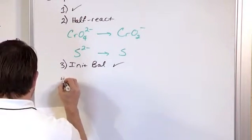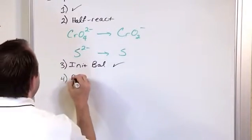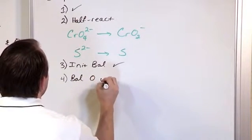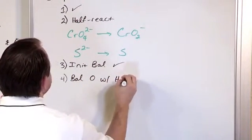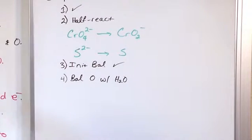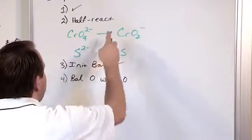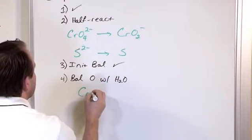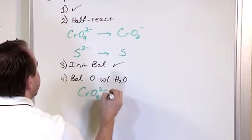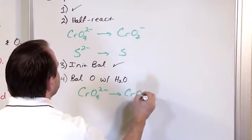Step number four is balance oxygen with water, H2O. What we're going to have, I definitely have some oxygen here. CrO4 2- goes to CrO2-. Here I have four oxygens and two oxygens.